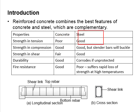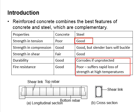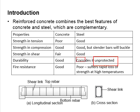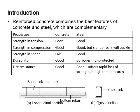As for steel, it is good in tension but weak in durability and fire resistance. If not protected, steel tends to corrode. Although steel is good in compression, its slenderness causes it to be sensitive to buckling. When buckling happens, the compressive strength of the steel will be affected.